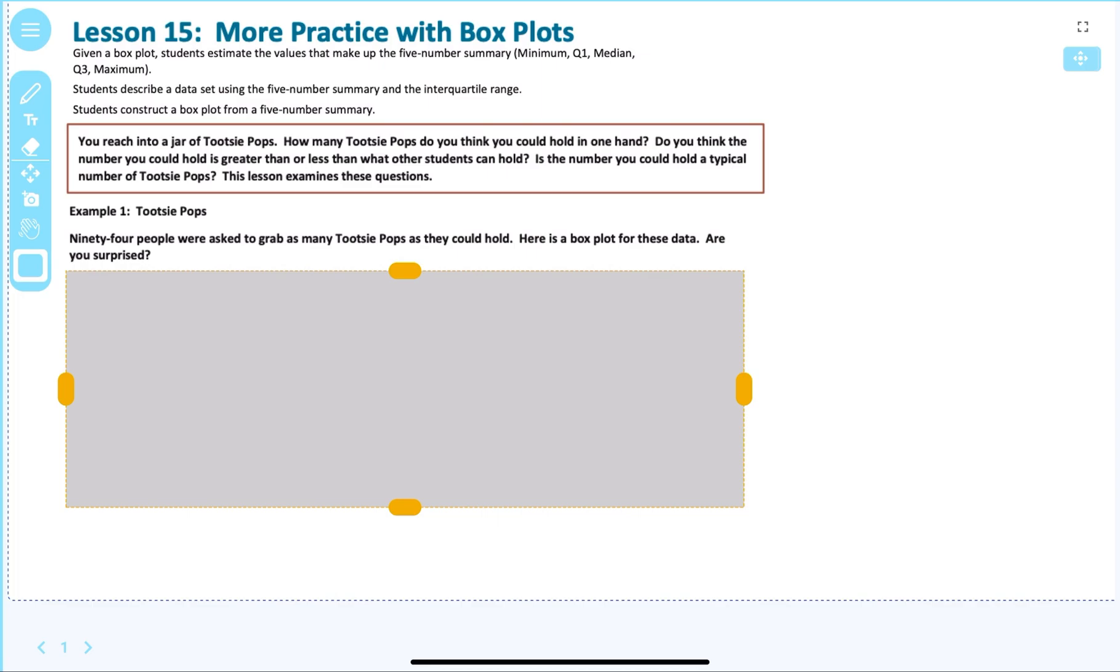Module 6 lesson 15, more practice with box plots. Given a box plot, students will estimate the values that make up the five number summary - that is the minimum, the Q1, median, Q3, and maximum. Students describe a data set using the five number summary and the interquartile range, and students construct a box plot from the five number summary.